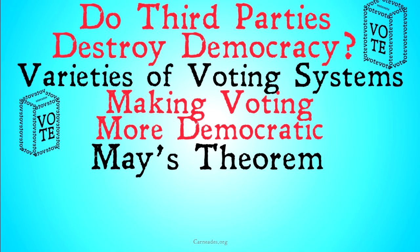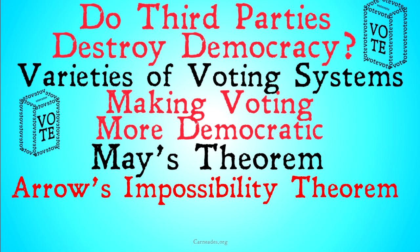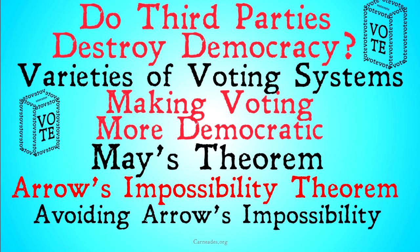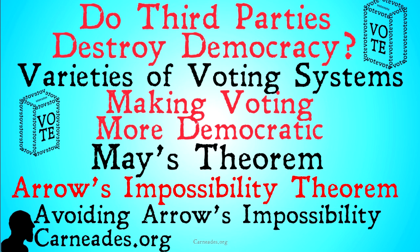What we're going to look at next is a voting system that will pass every single criterion. How can that happen, you might ask? Didn't we say we're going to get to Arrow's impossibility theorem, which shows that no voting system can match all these criteria? Stay tuned for our video on May's theorem to find out what that system is, then a video on Arrow's impossibility theorem, and finally a video on avoiding Arrow's impossibility. Watch this and more at carnadies.org, and stay skeptical, everybody.